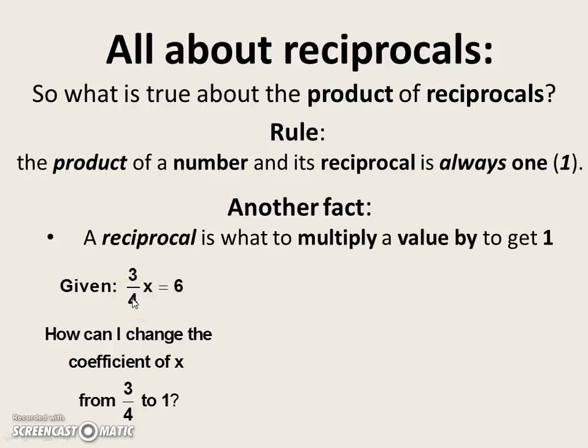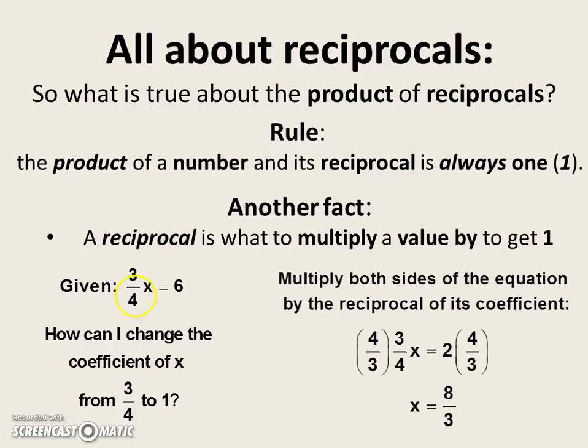Well, the coefficient here is three-fourths. So how do I change that to one? I can multiply both sides of the equation by the reciprocal of its coefficient. So if the coefficient is three-quarters, I can multiply it by four-thirds because, like it says, a reciprocal is what to multiply a value by to get it to be one.